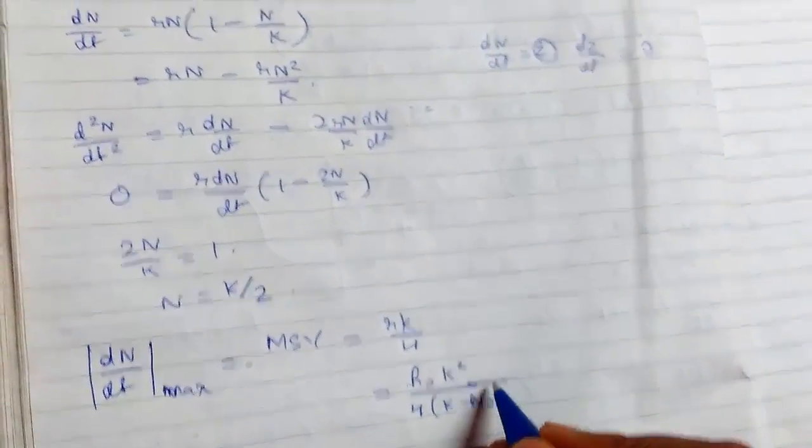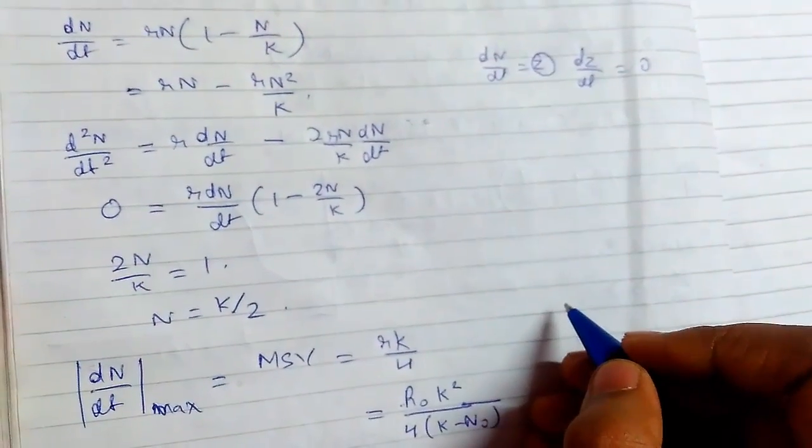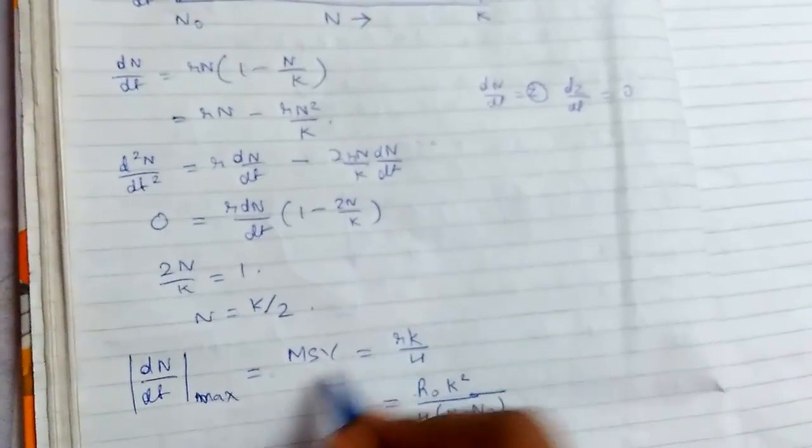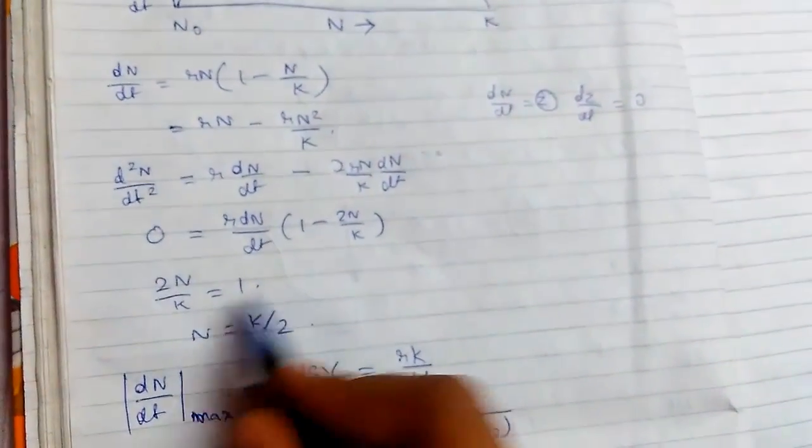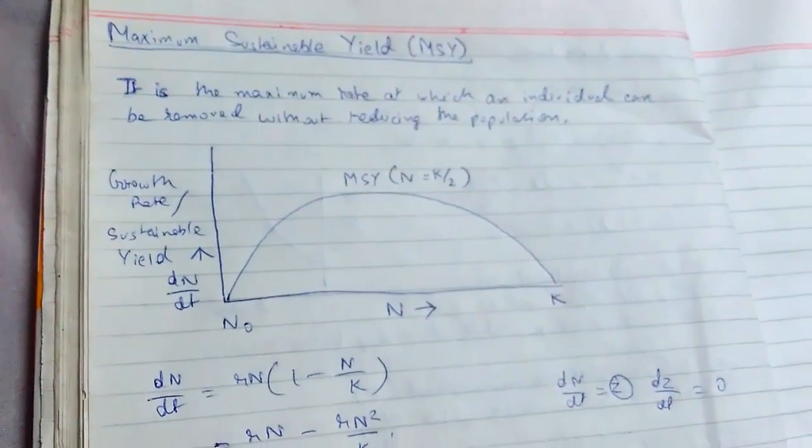So this was our maximum value and this is the condition at which it occurs. So this was all about maximum sustainable yield. Thanks for watching.